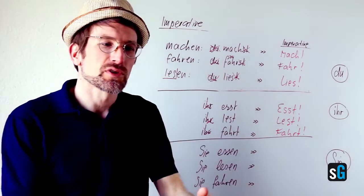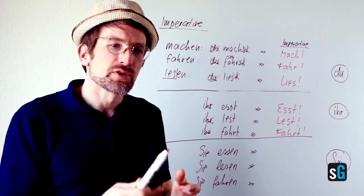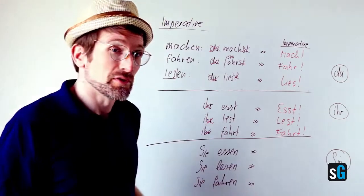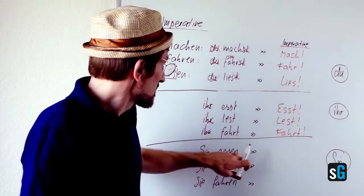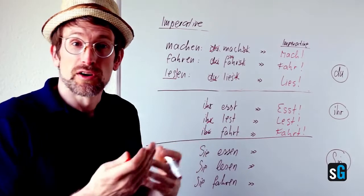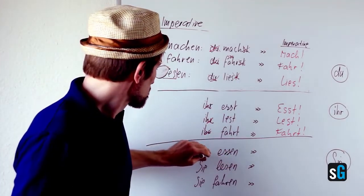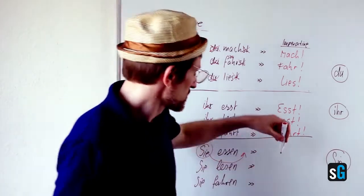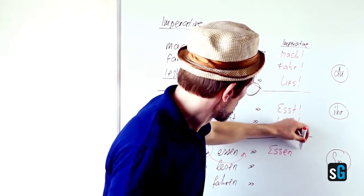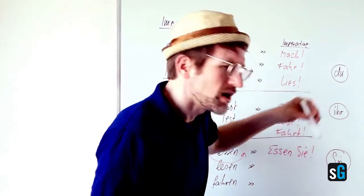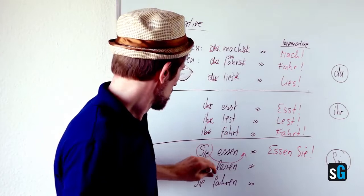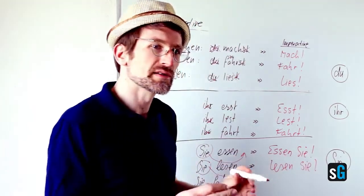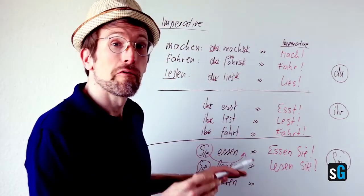Last form. Let's say you are talking or giving orders to a person that you are formal with. You use the Sie form. You have learned that already, I hope. Sie essen. You eat, sir or madam. All you got to do is take the Sie and put it behind the word and you are done. So the imperative is essen Sie, lesen Sie, and fahren Sie.